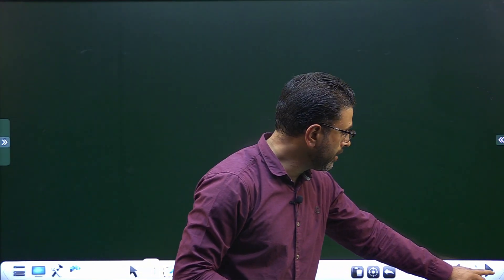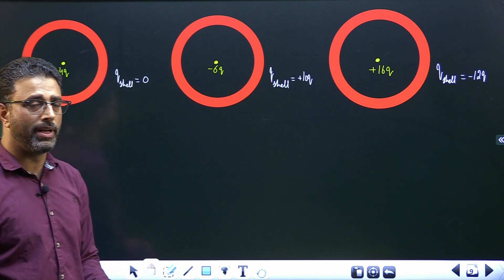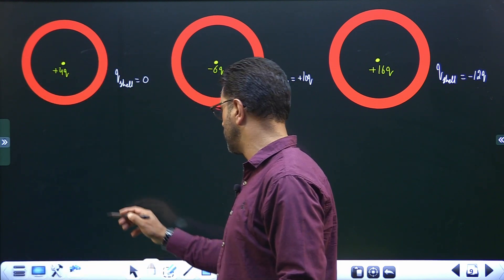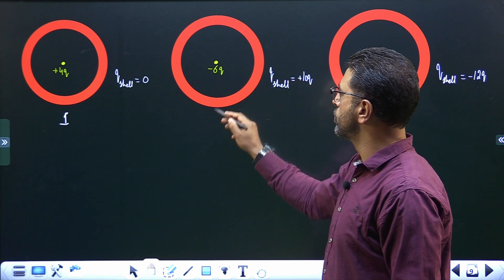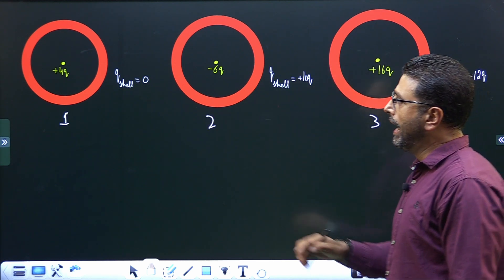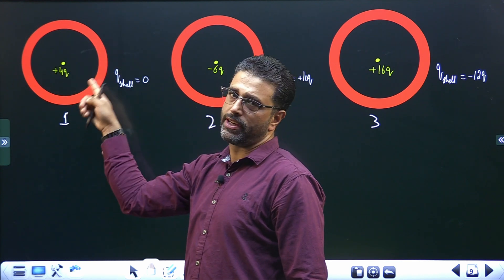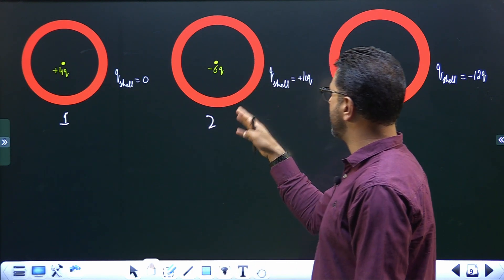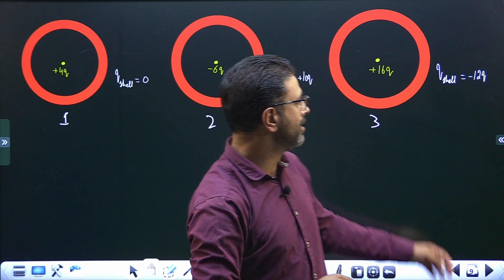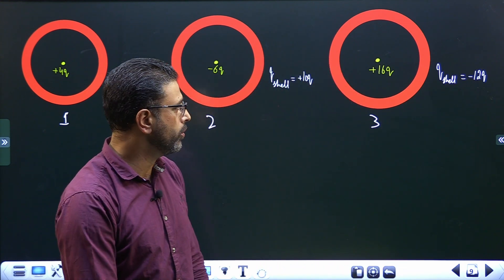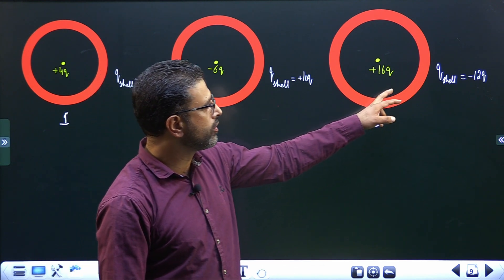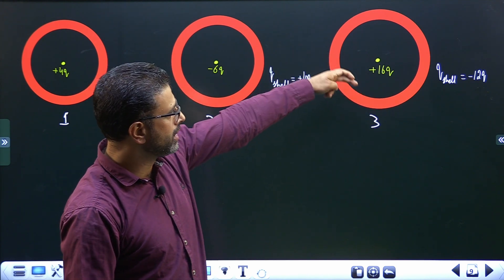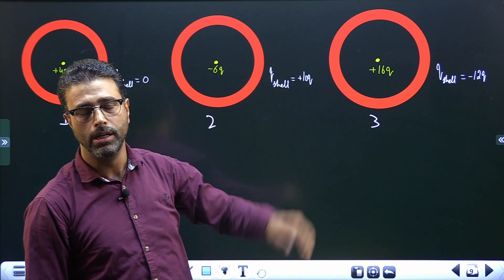So, question number 9 — what was it? This was the situation in question number 9. We were having a charged ball with a charge in 3 given situations. Situation 1 with a charge of plus 4Q, situation 2, and situation 3. Around this charged ball, we have a conducting metallic spherical shell. In the first case, this shell has a charge of 0; in the second case, the shell has a charge of plus 10Q; and in the third case, the shell has a charge of minus 12Q. Question number 9 asked us to find the distribution of the shell's charge on the inner surface and the outer surface in all three cases.